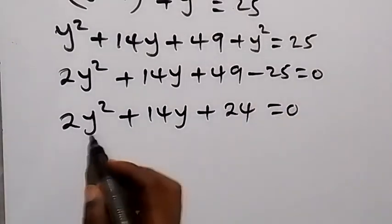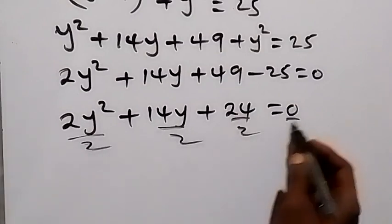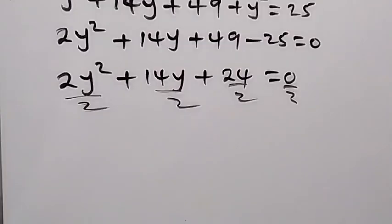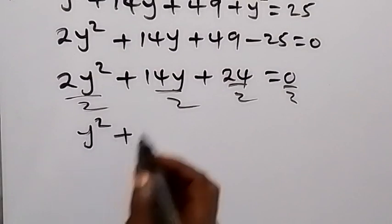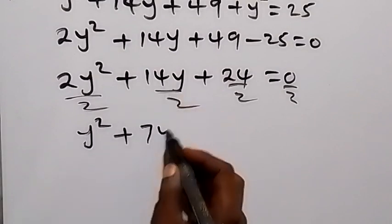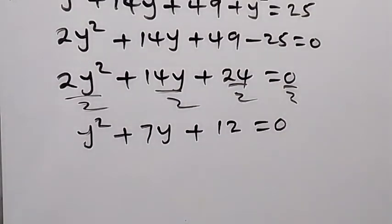Then we can divide by 2. We divide 2 by 2, this will become 2 cancels out here, that's y squared, then plus 2 going into 14 is 7, that's 7y, then plus 12 equals zero. This is a quadratic equation.